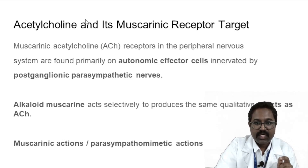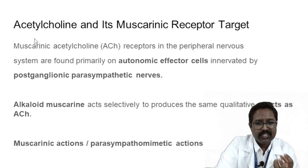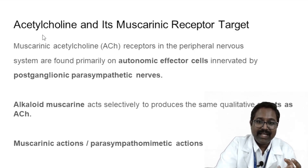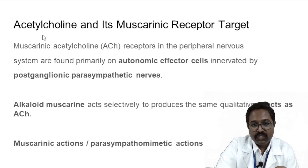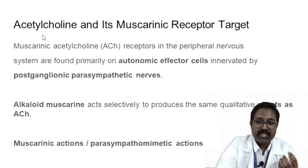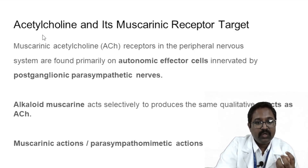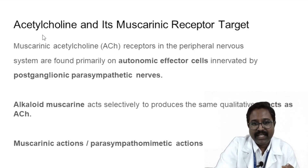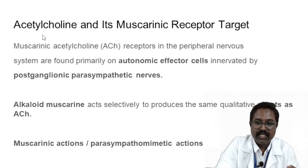Acetylcholine is a naturally occurring cholinergic agent. They are called cholinergic agents because choline combines with acetyl to form acetylcholine, and whenever acetylcholine acts on the receptors, those receptors are called cholinergic or muscarinic receptors. They are called muscarinic receptors because muscarine is an alkaloid which acts on the muscarinic receptors — that is why they are called cholinergic receptors or muscarinic receptors.